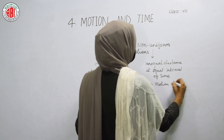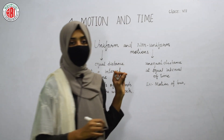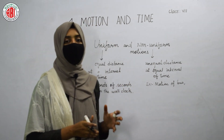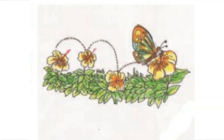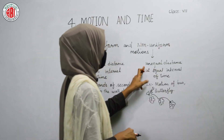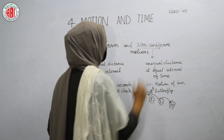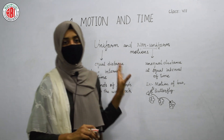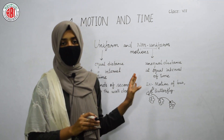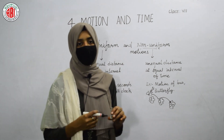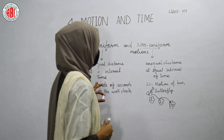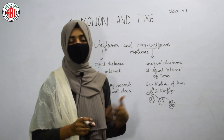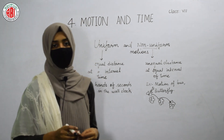For non-uniform motion, we take the example of a moving bus, car, or train — these vehicles travel unequal distances at equal intervals of time. We can also take the example of a butterfly, which is an insect that travels unequal distances and shows non-uniform motion. So uniform motion means traveling equal distances and non-uniform motion means traveling unequal distances in a given time.